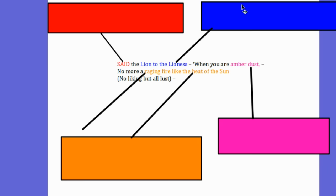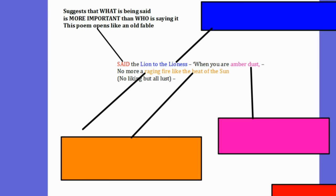Now the word said here is important, it suggests that what is being said is more important than who is saying it. In this regard the poem opens like an old fable, like one of those old classical stories, said the lion to the lioness. So it opens like an old fable.